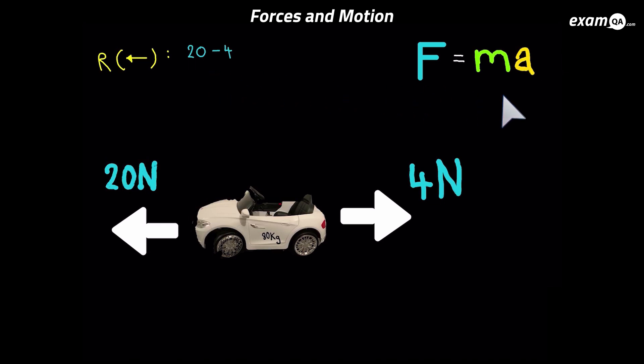So these are our forces. And all of this is equal to MA. And we know the mass of the car is 80 kg, so the M is 80. And the A, of course, we're trying to work out. We don't know, so we'll just write it as A. So fill in that formula, F equals MA. Simplifying this, we get 16 equals 80A.